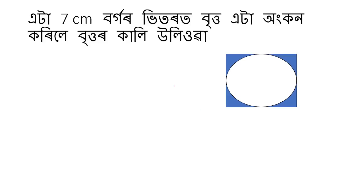The first question: the diameter is 7 cm. The radius is 3.5 cm. The formula for area of a circle is pi r squared.